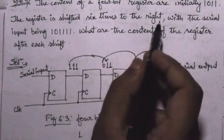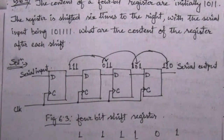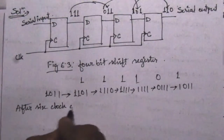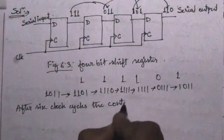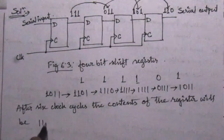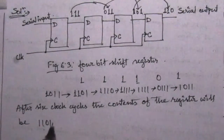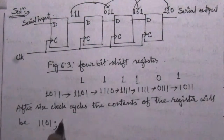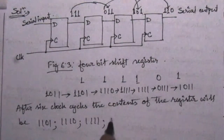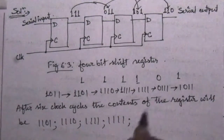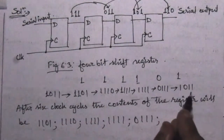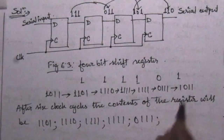The register is shifted six times to the right. After the fifth clock cycle the content is 1011, and after the sixth clock cycle the final content of the register is 1011. So the full sequence of contents after each shift is: 1101, 1110, 1111, 0111, 1011, 1011.